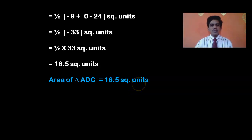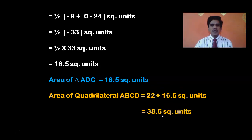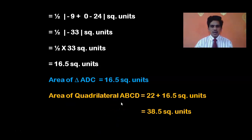We have the areas of both triangles. To calculate the area of the quadrilateral, we add the two areas: 22 + 16.5 = 38.5 square units. This is how you calculate the area of a quadrilateral using the triangle area formula — divide the quadrilateral into two triangles by drawing a diagonal, find the area of each triangle, then find their sum. You need not even draw the diagram; you can just imagine the diagonal.